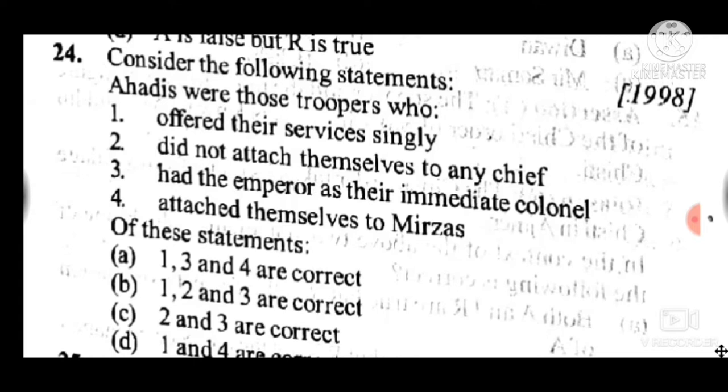Question 24 answer is B — one, two, and three statements are correct. The statements relate to Ahadis: they offered their service singly, did not attach themselves to any chief, and had the emperor as their immediate colonel.